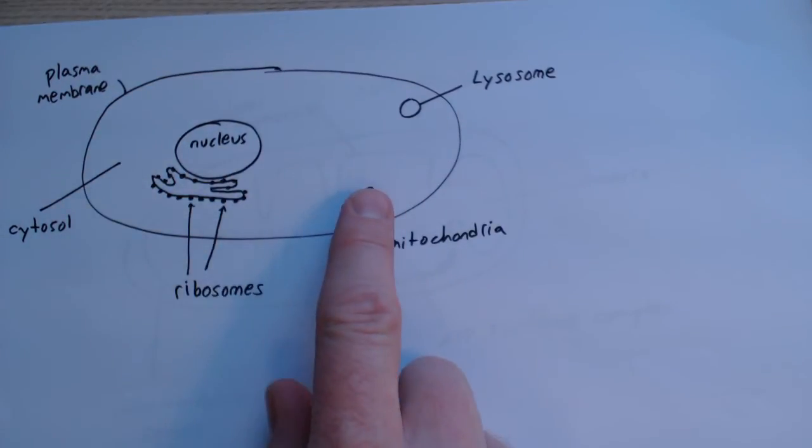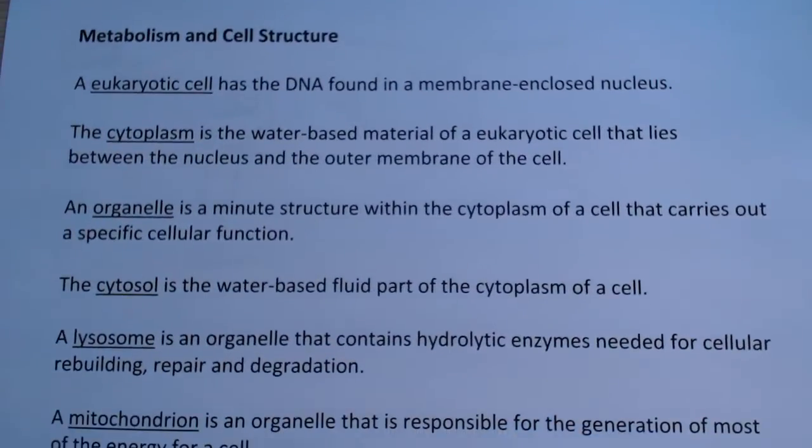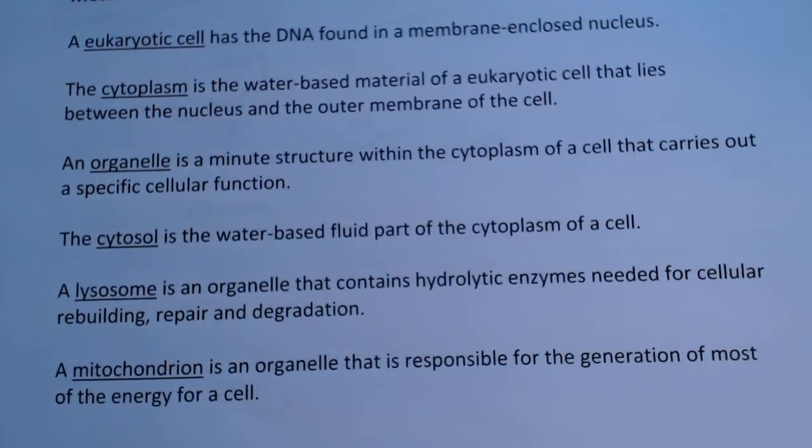The cytoplasm is the water-based material of a eukaryotic cell that lies between the nucleus and the outer membrane and contains everything other than the nucleus. An organelle is a minute structure within the cytoplasm of a cell that carries out a specific cellular function. The cytosol is the water-based fluid part of the cytoplasm of the cell.